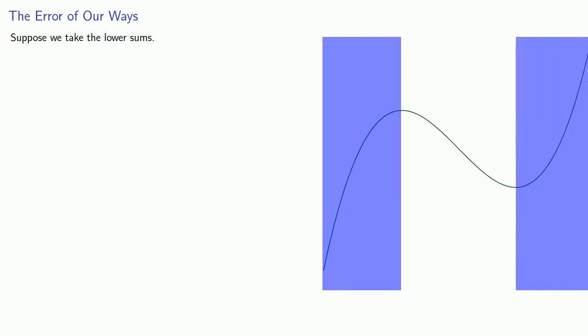But these are only approximations. So let's see if we can try to improve our approximations. Suppose we take the lower sums and make two important simplifications. First, we'll assume that all of our partitions have the same width. The other simplifying assumption is that our graph is monotonic. That's a fancy way of saying it's only going in one direction, either it's always increasing or it's always decreasing.